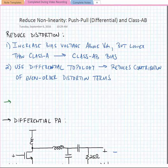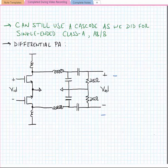Just as we did for the class A and class B or AB amplifiers, we can still use a cascode in our push-pull amplifier. So here's our differential power amplifier. I haven't included the cascode in this schematic, and you might notice that the schematic looks the same as it would if it were a class A, AB, or B, and that's because the only difference between those modes of operation is the DC bias point.